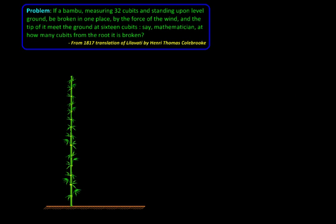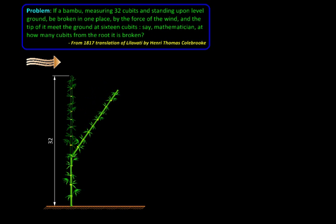To start with, we have been given a bamboo with length 32 cubits. Then it is broken in one place by the force of the wind. There seems to be a strong wind capable of even breaking this bamboo, causing it to sway and ultimately break, with its tip resting on the ground.